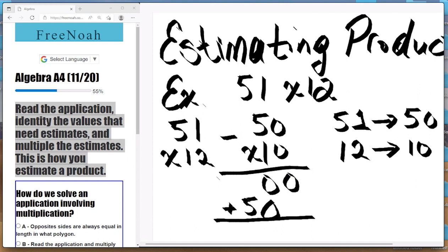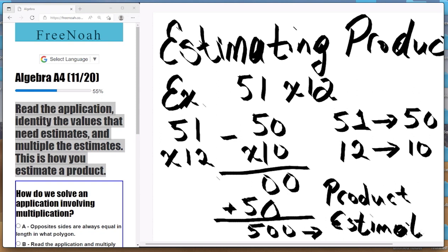Now we add, and when we add everything together we get a product of 500. So this is our product estimate, 500. The product estimate of 51 and 12 is 500.